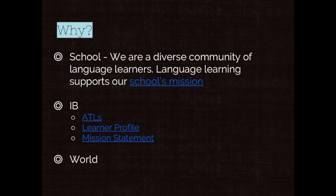At AIS our students speak a huge variety of languages — from Dutch to Italian to French to German to Spanish. Many of our students speak a different language at home than English, and so we need to support those students to develop their English fully. If you look at our school's mission statement, we want to develop every child fully. We want our students to be multilingual and able to be successful in a global community.